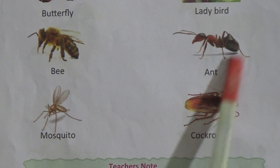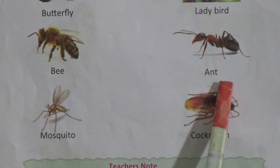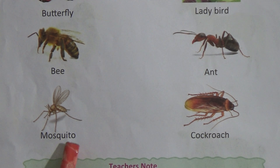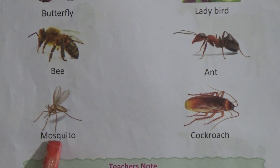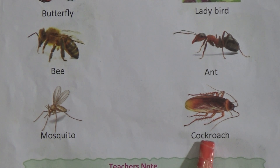Next one here is ant. This one is ant and the spelling of ant is A-N-T, ant. And we can see here the insect name is mosquito. The spelling of mosquito is M-O-S-Q-U-I-T-O, mosquito. And the last picture here is cockroach and the spelling of cockroach is C-O-C-K-R-O-A-C-H, cockroach.